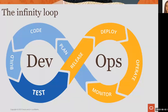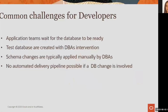But there are situations where challenges come. One example would be to have in the development environment similar databases as the production environment in the shortest time possible. I've put together some of the most common challenges that developers have in relation to the production environment. Application teams wait for DBAs to have their database ready. These databases are created usually with DBA intervention. Schema changes are typically applied manually by DBAs, and no automatic delivery pipeline is possible if a database change is involved.